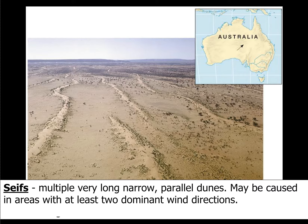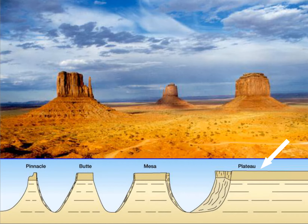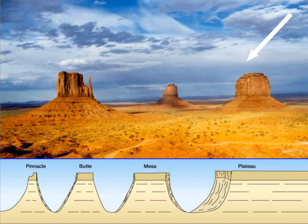Seif dunes are multiple, very long, very narrow, parallel dunes. They may be caused in areas with at least two dominant wind directions. In dry areas, plateaus are often cut into erosional features that vary by size. Mesas are larger than buttes, which are larger than pinnacles. Note how these related landforms are approximately the same height.